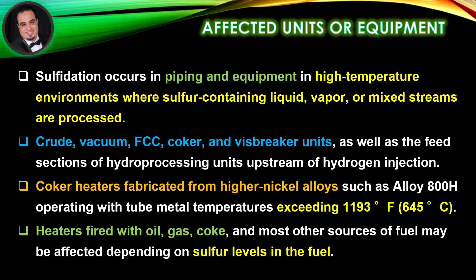Also affected are the feed sections of hydroprocessing units upstream of hydrogen injection. Coker heaters fabricated from higher nickel alloys, such as alloy 800H, operating with tube metal temperatures exceeding 1193°F (645°C) are affected. Heaters fired with oil, gas, coke, and most other sources of fuel may also be affected depending on sulfur levels in the fuel.